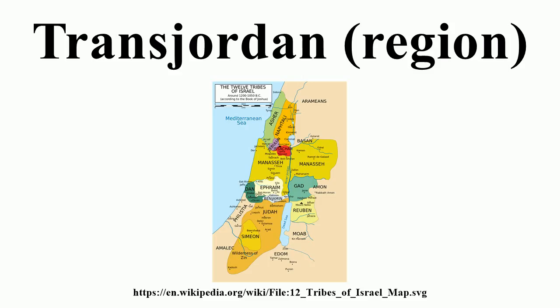Central government was established in Transjordan in 1921, and in 1922 the region became known as the Emirate of Transjordan, receiving full autonomy in 1929. In 1946, the Emirate achieved independence from the British, and in 1952 the country changed its name to the Hashemite Kingdom of Jordan.